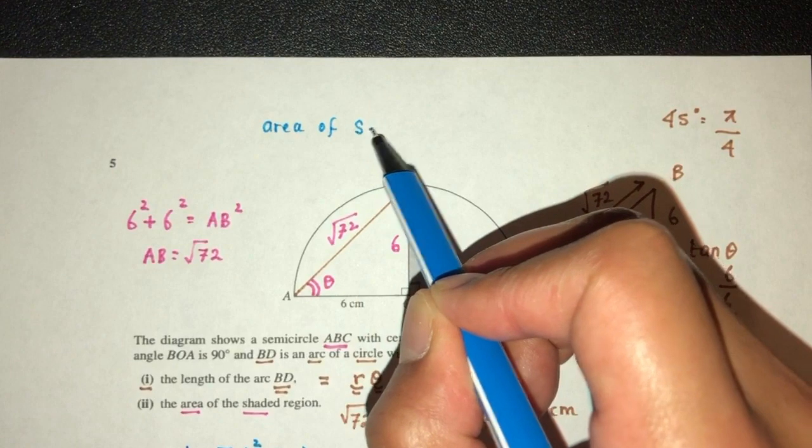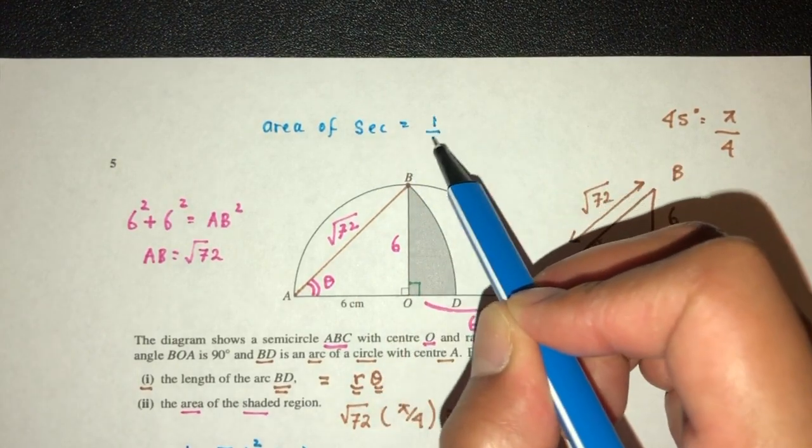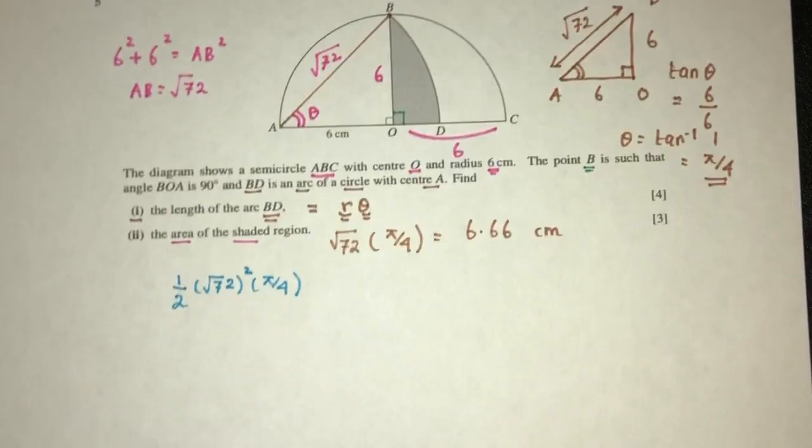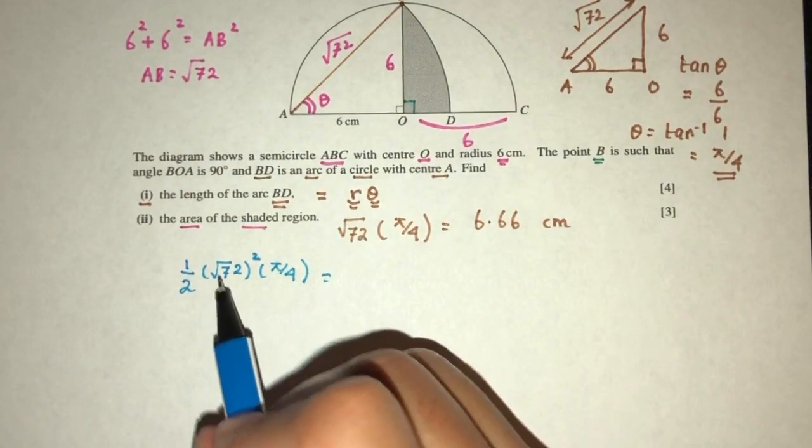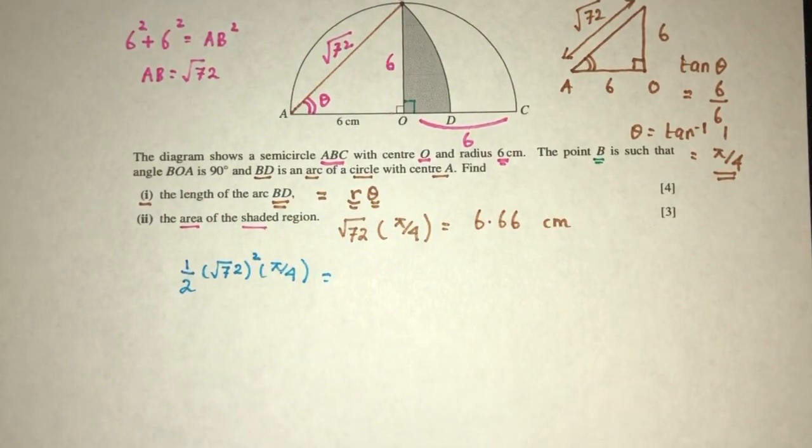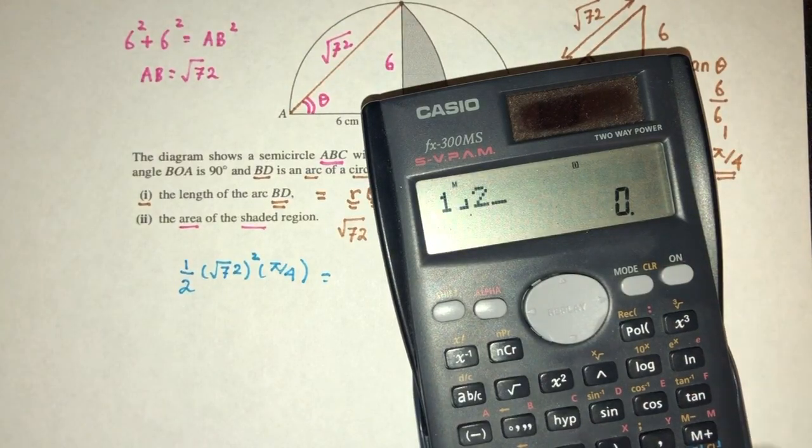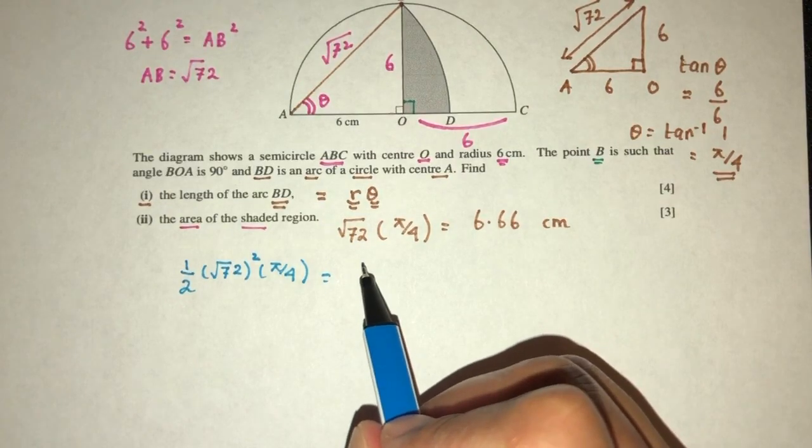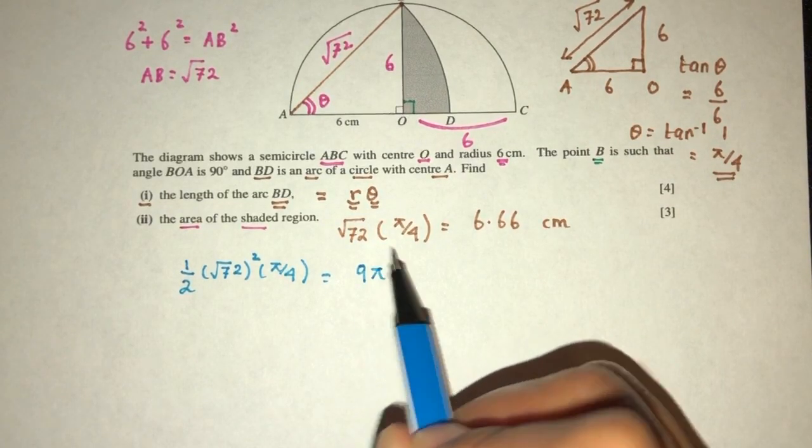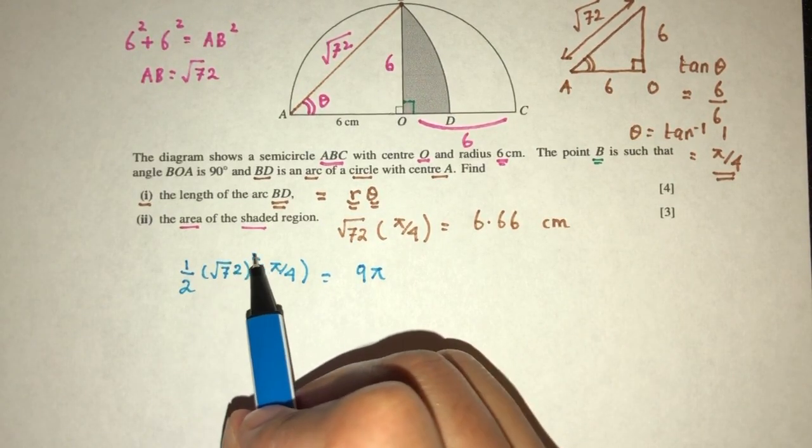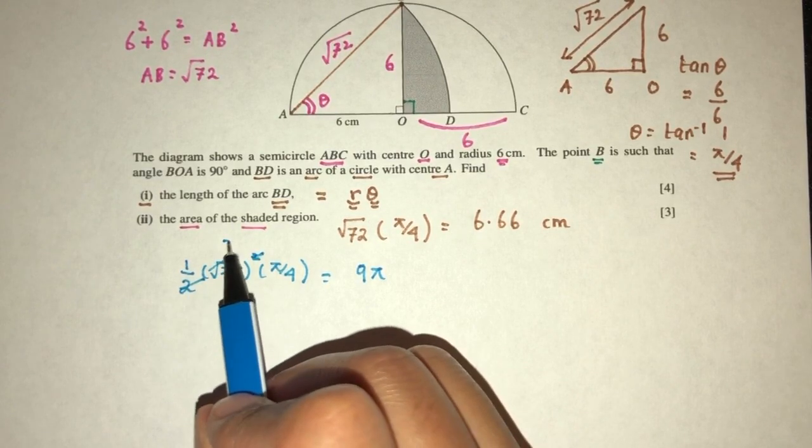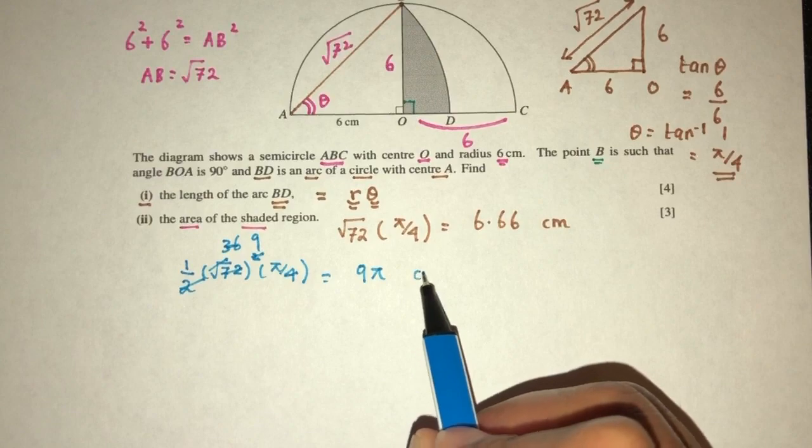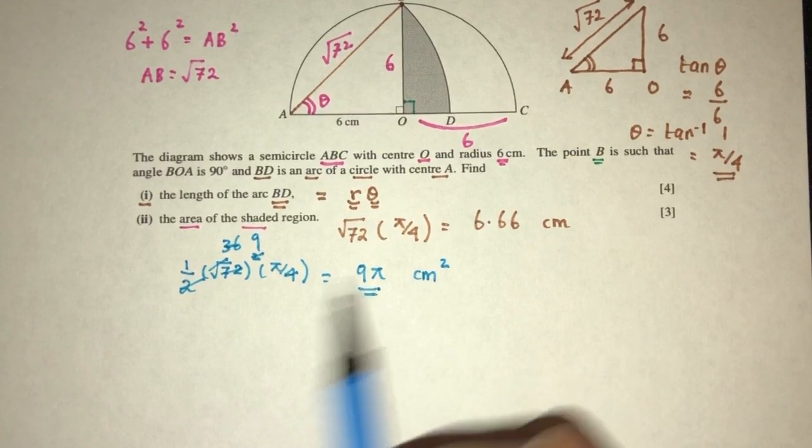Area of sector is half R² theta. Now this is equal to what? That will be half times 72, that should be 36 times 1/4. That should be 9, so that should be 9π. Because here this will go away, cancel out. This will be 36, and this will become 9. So 9π centimeters squared for the area of the whole thing.